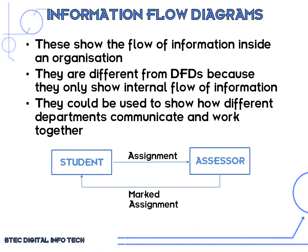An information flow diagram is slightly different from a data flow diagram because they only show internal flow of information. They could be used to show how different departments communicate and work together. This example shows a student giving their assessor an assignment and the assessor would return the marked assignment back to the student.